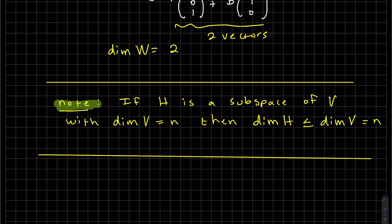This is just a little note that I need for my next theorem that I'm going to prove. If h is a subset of v, and dim of v is n, then dim of h is less than equal to the dim of v, which is less than equal to n. So if you're a subspace, then the dimension has to be equal to or smaller.